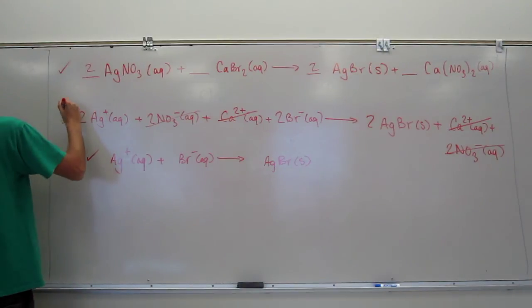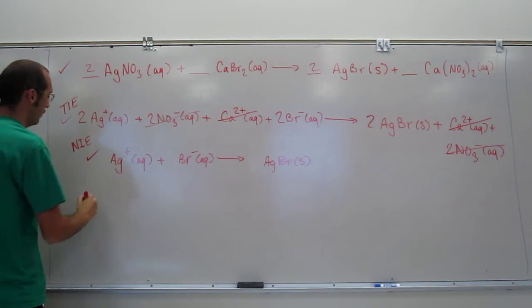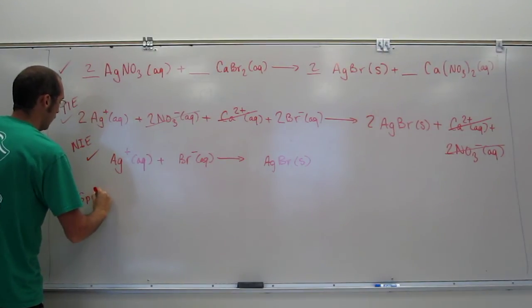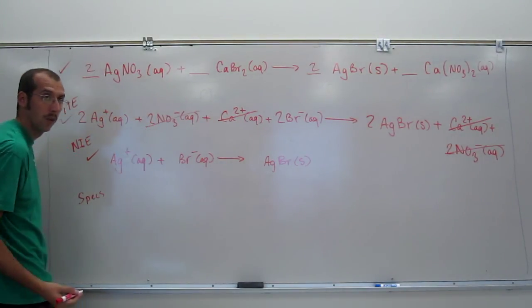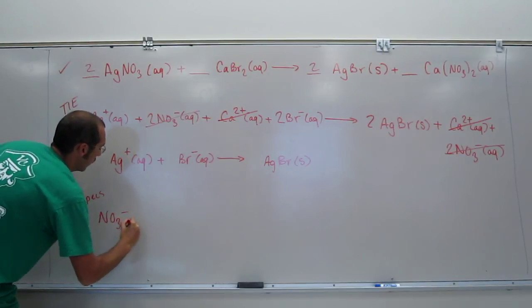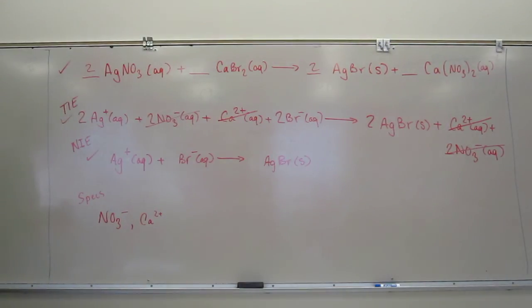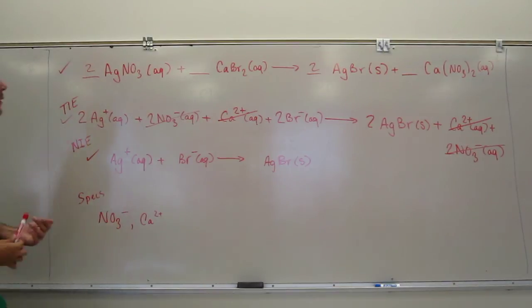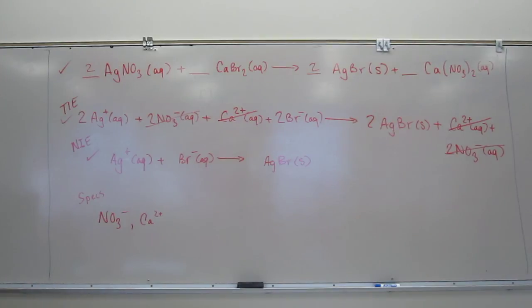So, I think, so a lot of people will call this the TIE and then the spectator ions are going to be the things that you crossed out, right? You don't need to put the two, right? NO3 minus, and Ca two plus. You cool with that? Are there any questions on that one? So, I think the real trick to these is to remember your polyatomics, you know?